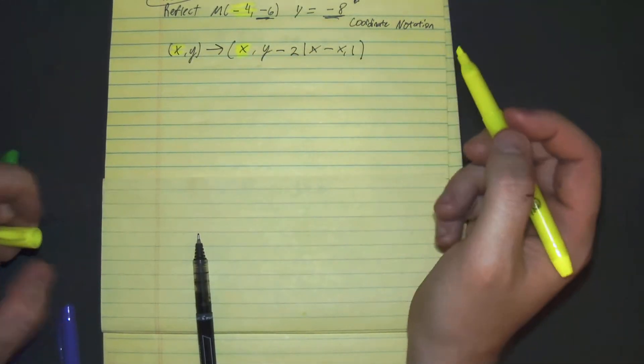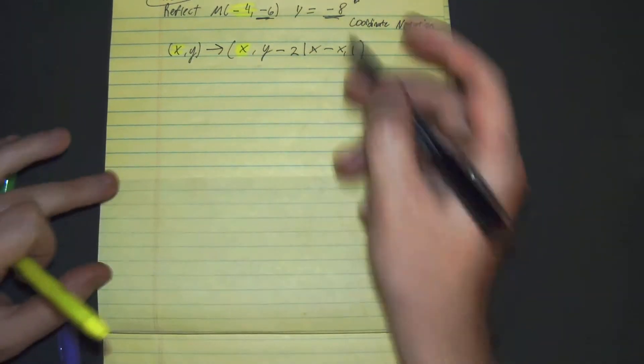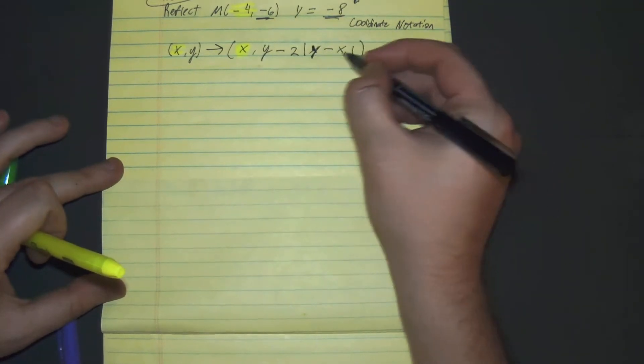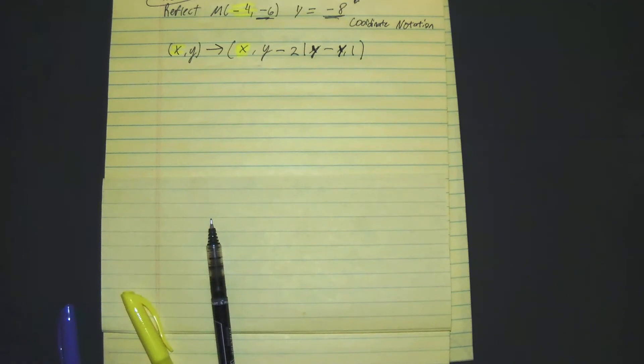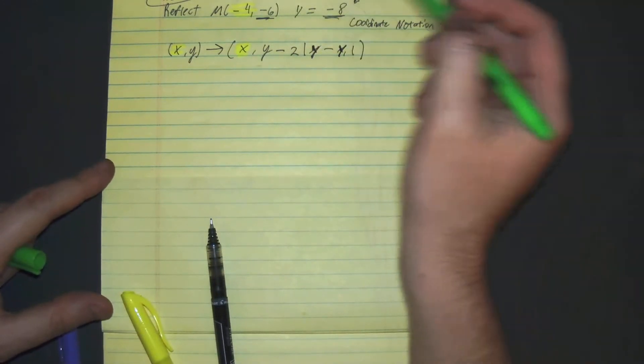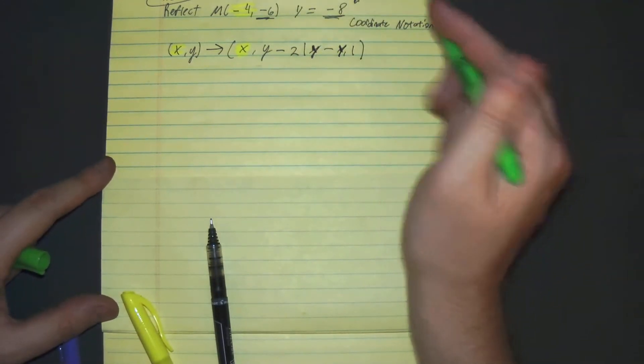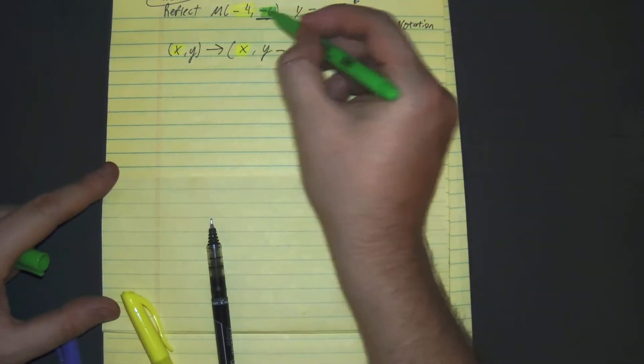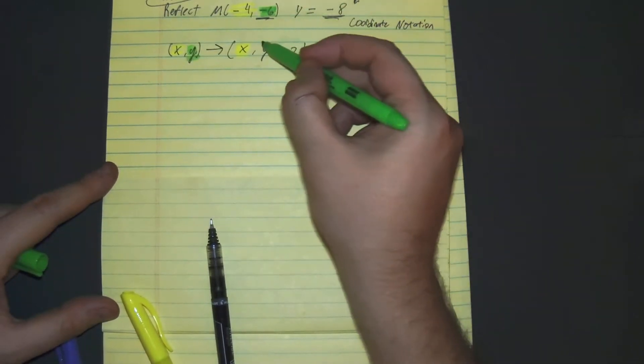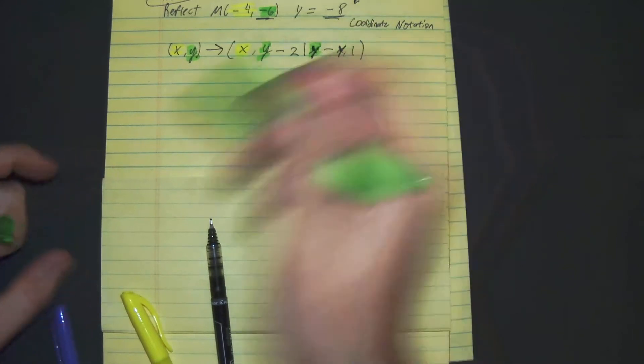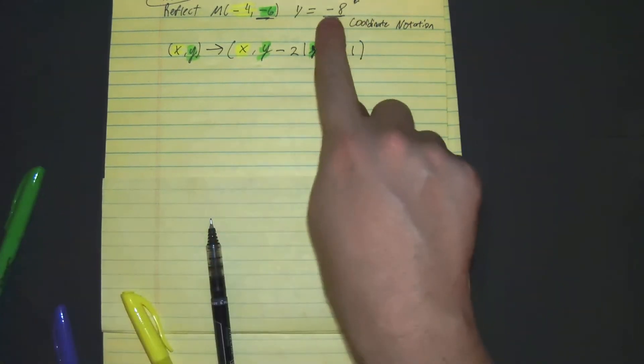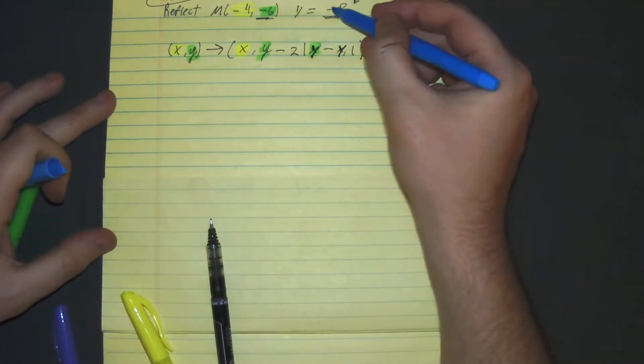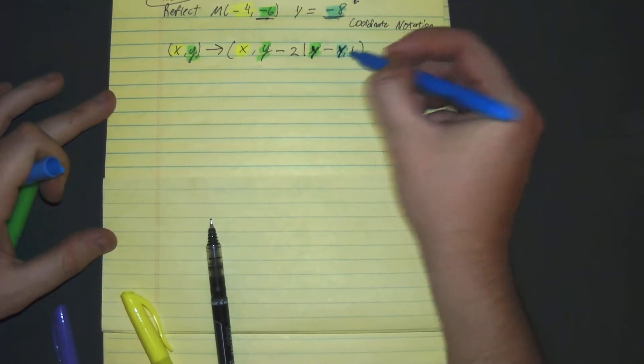So the x goes right there. I meant to use, this should be a y. Alright, and then we have our y, negative 6. And then we have our zero slope, negative 8, which would go right here.